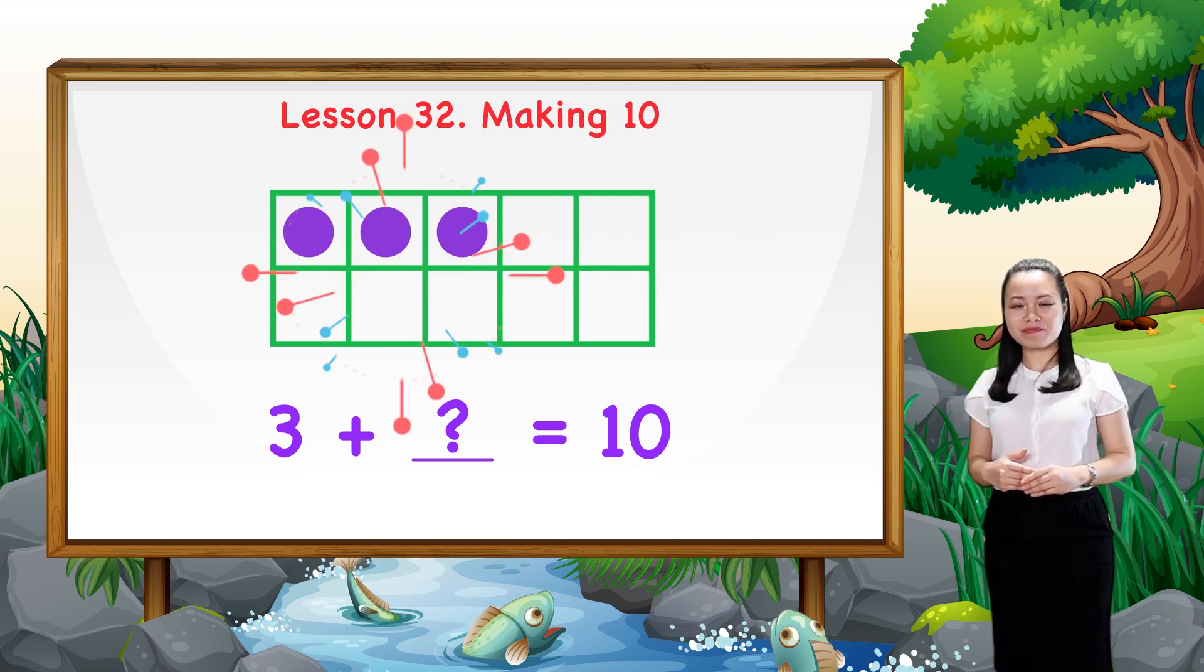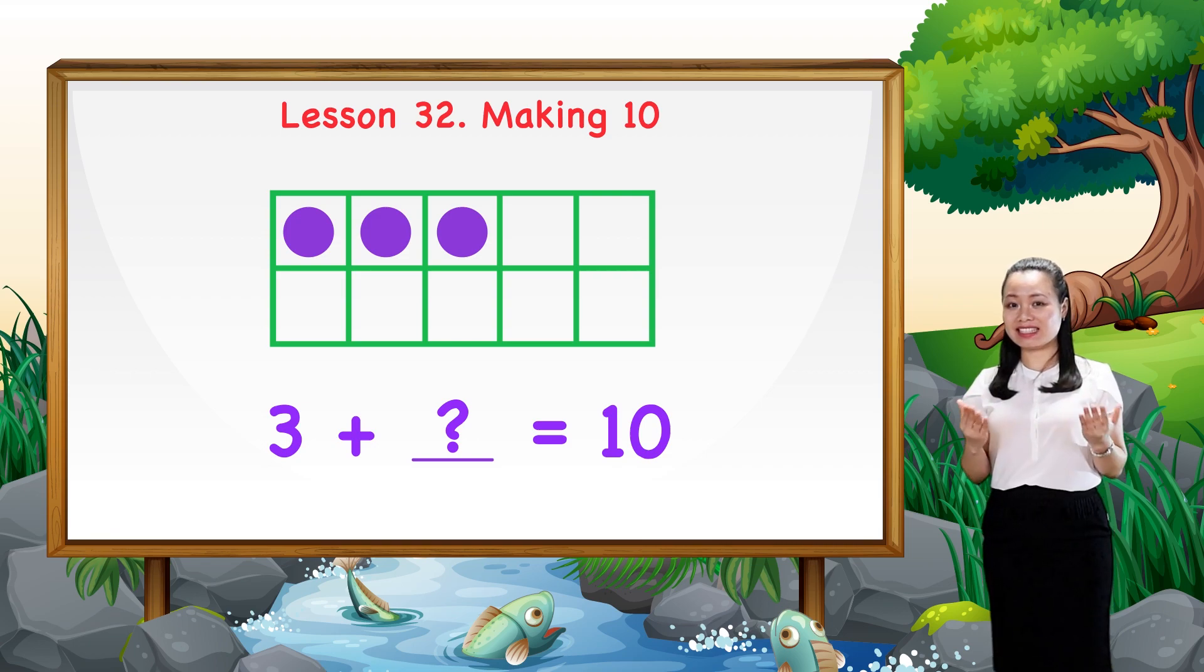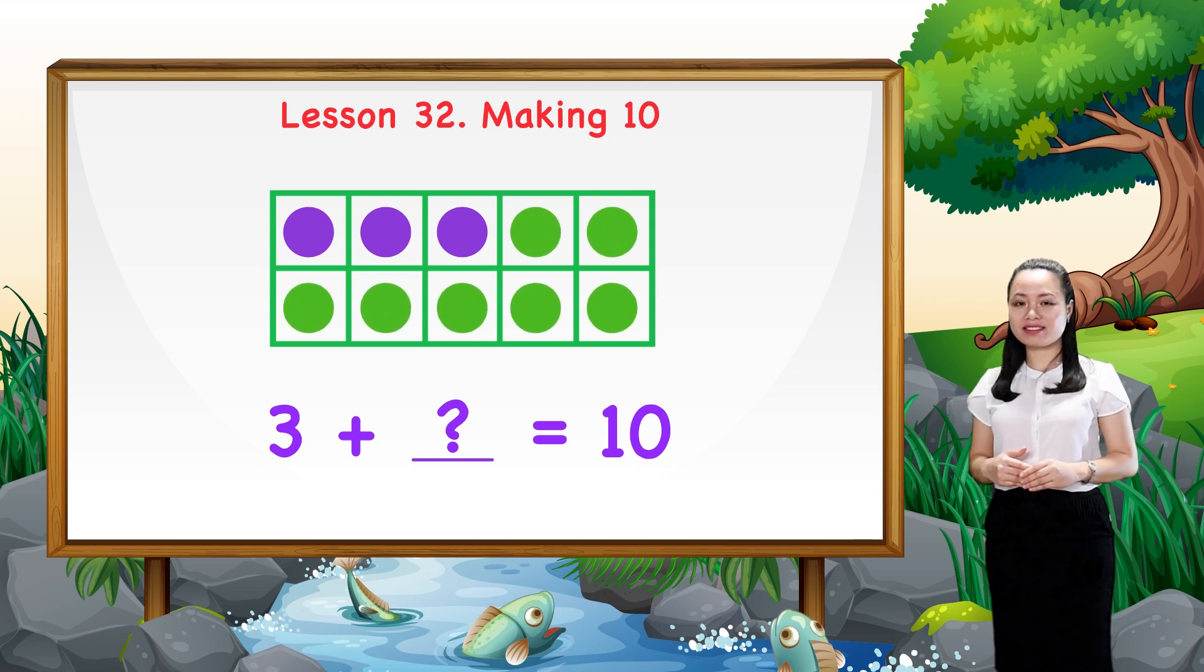How could we find the answer? We already know a full frame has ten dots. So, to make ten in the ten frame, just draw more dots until the frame is full.